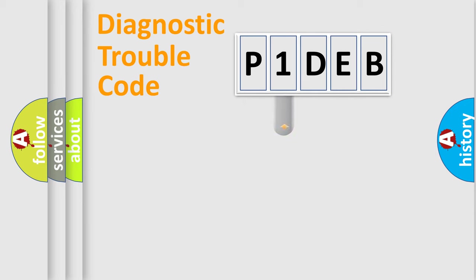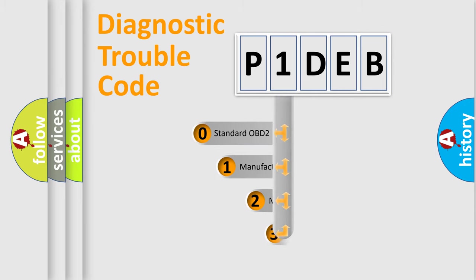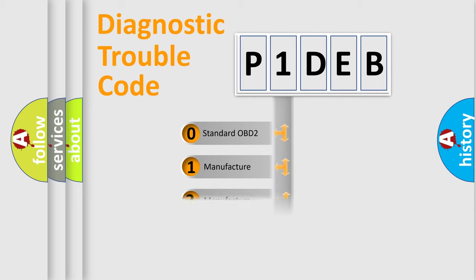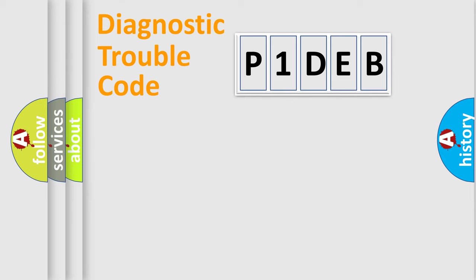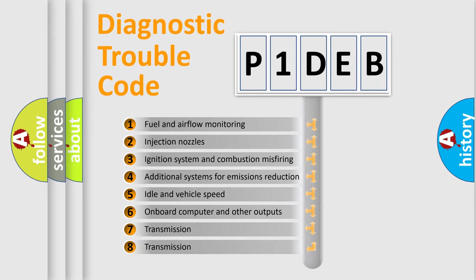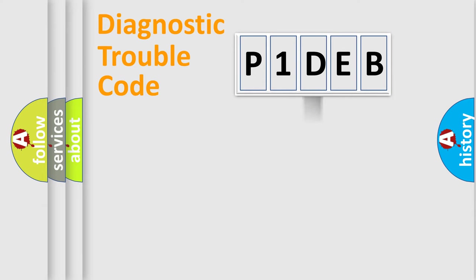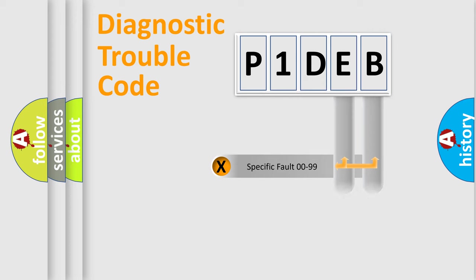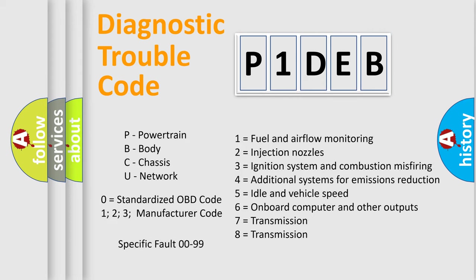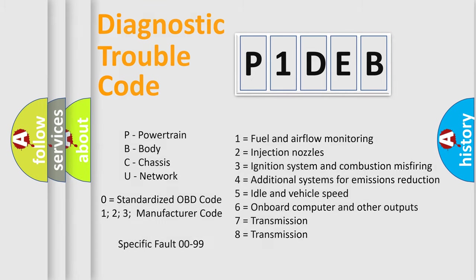This distribution is defined in the first character of the code. If the second character is expressed as zero, it is a standardized error. In the case of numbers 1, 2, or 3, it is a more manufacturer-specific expression of the car error. The third character specifies a subset of errors. The distribution shown is valid only for the standardized DTC code. Only the last two characters define the specific fault of the group, and such a division is valid only if the second character code is expressed by the number zero.